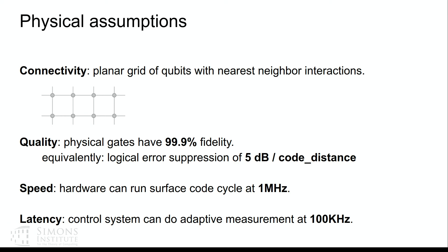In terms of hardware speed, superconducting qubits are pretty fast—they can do gates in tens or hundreds of nanoseconds. In terms of the surface code, that caches out to wanting to measure all stabilizers about a million times per second. There's also the classical control system that wraps around the quantum computer, which needs to do a measurement and react to pick the next measurement to do—we assume that's around a 10-microsecond round trip time, giving about 100,000 sequential logical operations.